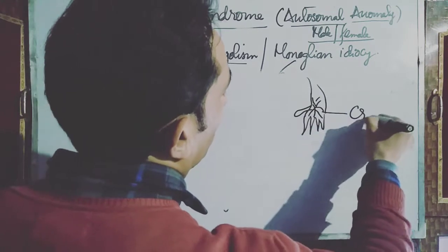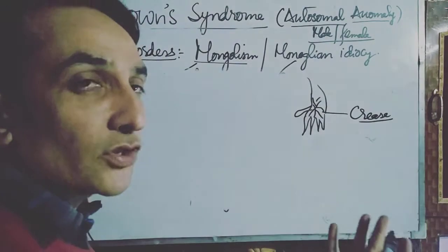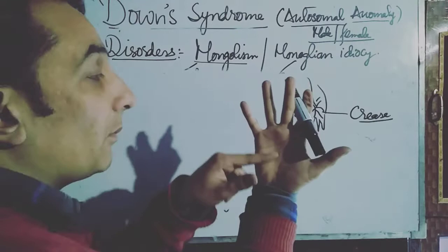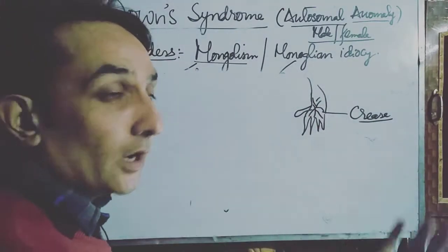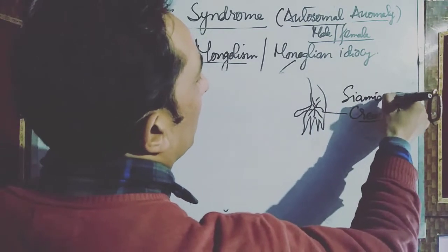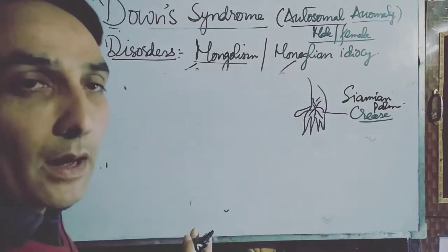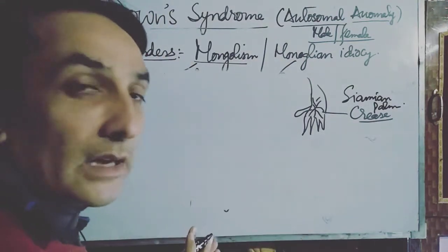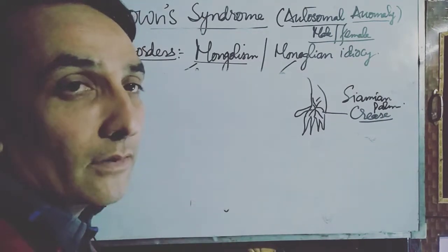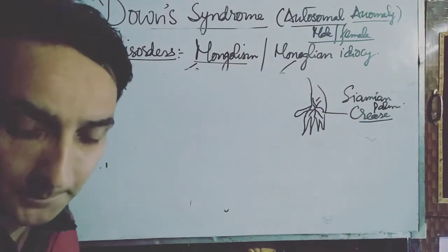Persons suffering from Down syndrome also have a different crease pattern on their palm. This is the human crease pattern, but their crease pattern on the palm does not resemble that of normal humans — that is known as simian palm crease. These are some of the disorders seen in persons suffering from mongolism or Down syndrome.